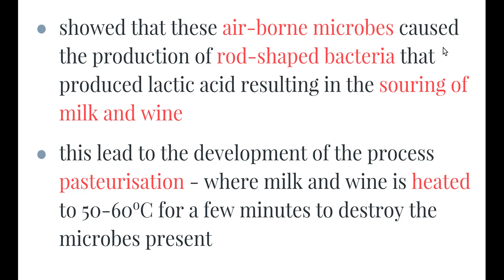He worked very closely with a winemaker who was having trouble stopping his wine from going bad and developing a bitter taste. When Pasteur looked at it under the microscope, he could see rod-shaped bacteria present in the wine that had gone bad, but not in the wine that was still good. Through his testing, he came up with the process now known as pasteurization, where wine and milk are heated to about 50 to 60 degrees Celsius for a few seconds. This increase in temperature destroys the microbes present and stops the wine or milk from going bad. Modern milk manufacturers still use pasteurization today.